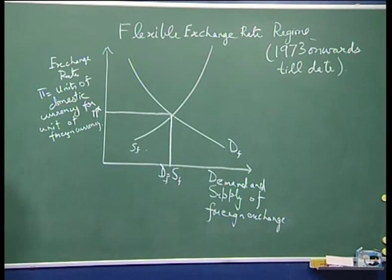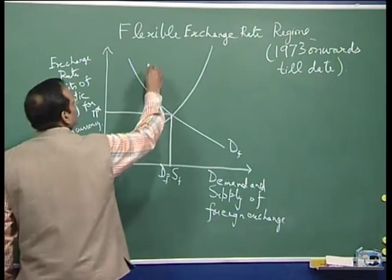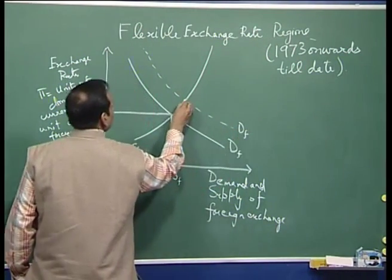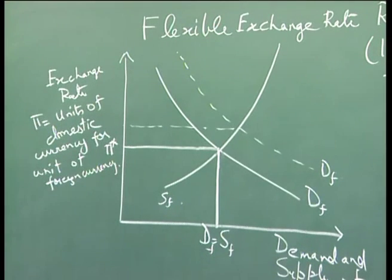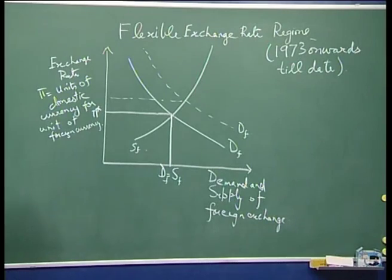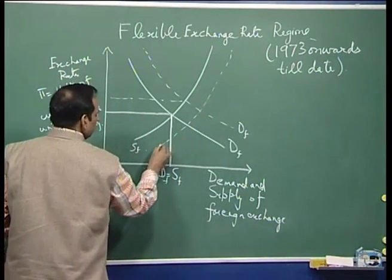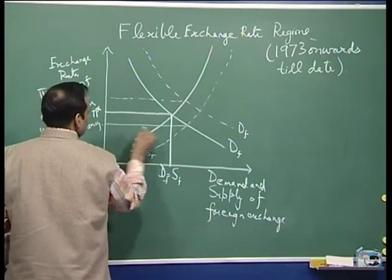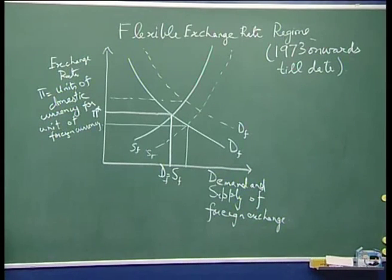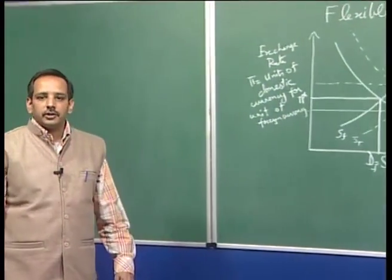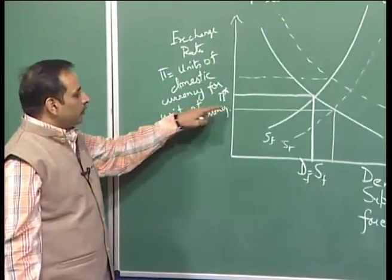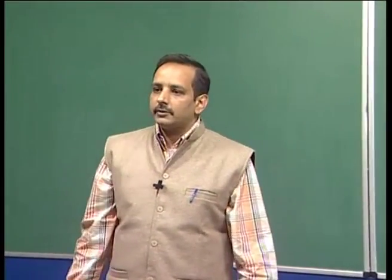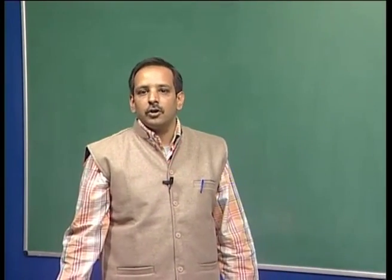In this freely floating or flexible exchange rate regime, if there was an increase in demand for foreign exchange, pi would increase — the exchange rate would increase. Say, 1 US dollar which was 40 rupees would now become 50 rupees. If there was an increase in supply, the exchange rate would come down — 1 US dollar which was 40 rupees would now become 20 rupees. So if pi increases, there is appreciation of the foreign currency or depreciation of the domestic currency. If pi goes down, there is depreciation of the foreign currency and appreciation of the domestic currency.